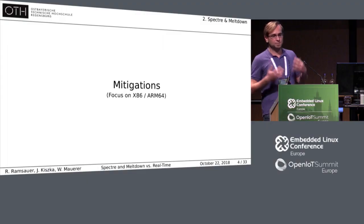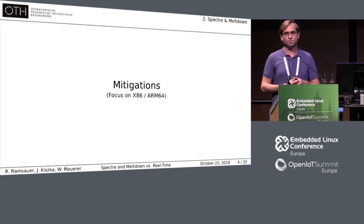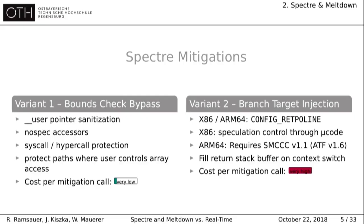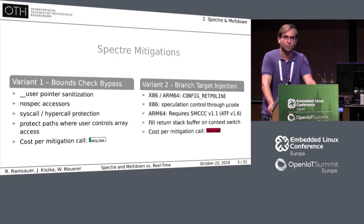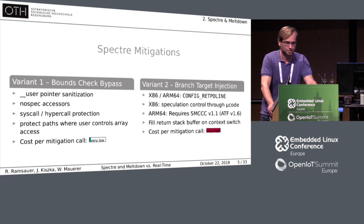On the mitigations, I will particularly focus on x86 and ARM64 platforms — those are the platforms we measured during our analysis. I do not want to go into greater detail on how those attacks work because they are very complex; I want to focus on the mitigations only. For Spectre variant 1, the bounds check bypass, we have the so-called user pointer sanitization, where when we enter kernel space we need to protect input that might be forwarded by the user, such as the system call number. On both platforms we use the so-called no-speculative accessors to protect against this attack. Luckily, the cost per mitigation call on those systems is rather low.